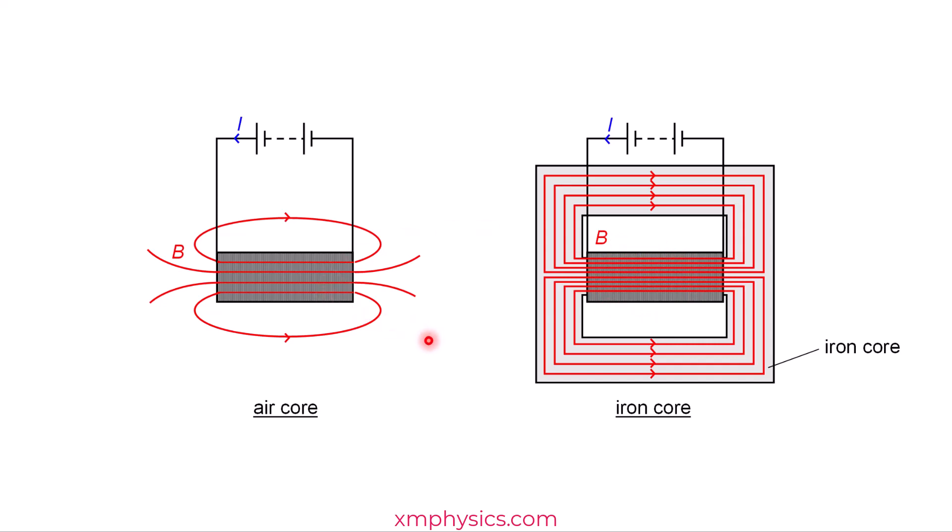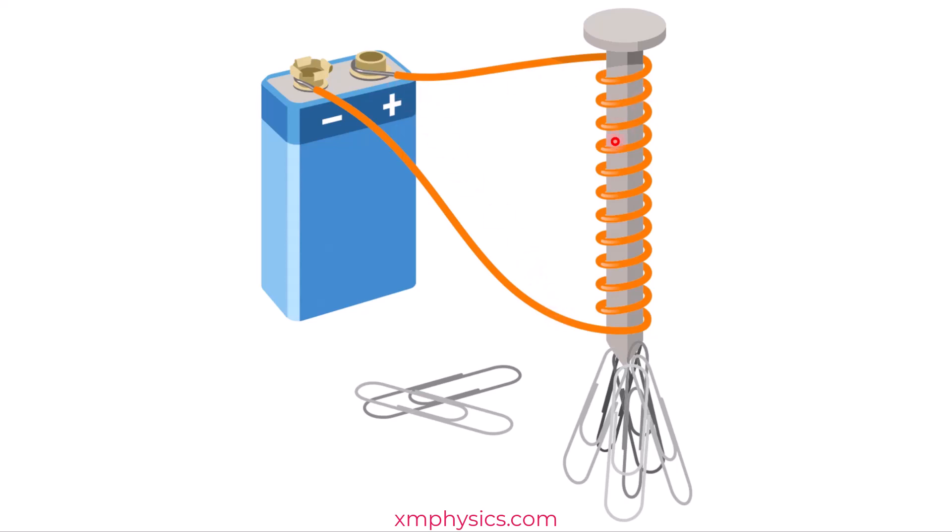Actually, you are aware of this since primary school. Remember the standard experiment that your primary school teacher made you do? So you actually have a solenoid, right? Without the nail, the magnetic field produced by the solenoid will be very weak and it's not able to attract the paper clips.